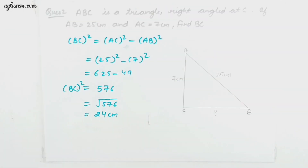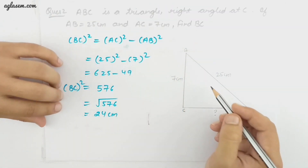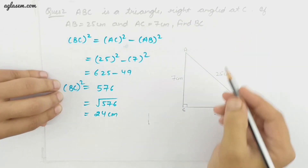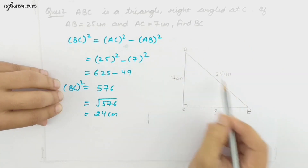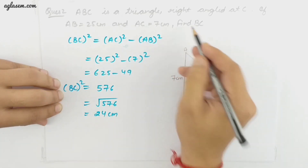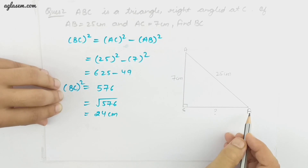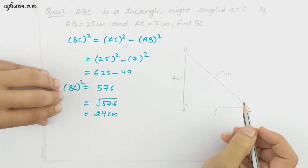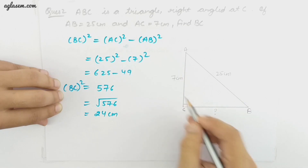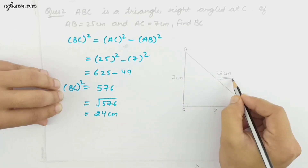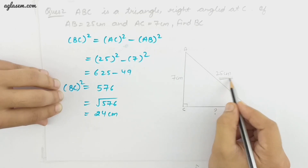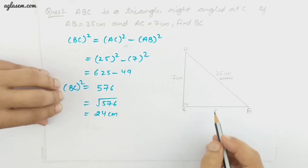Question number 2: ABC is a triangle right-angled. AB is 25 centimeter and AC is 7 centimeter. Find BC. We will use the Pythagoras theorem again. Here we have to subtract one side's square from the hypotenuse square to find the missing side.